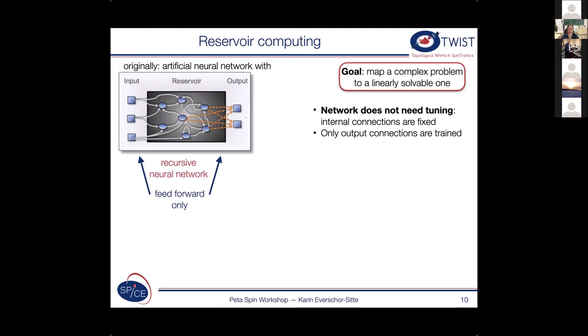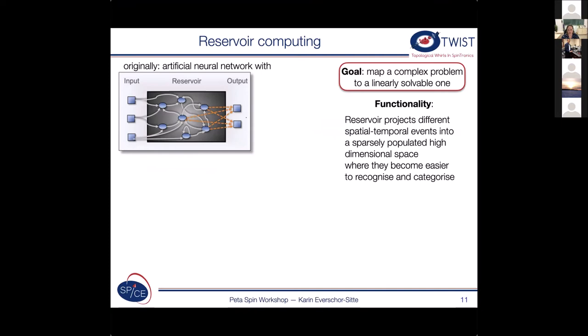And the goal of reservoir computing is not to solve something directly but to start from a complex problem and map it into something that is then linearly solvable and linearly solvable means easily solvable. So what is then the functionality of the reservoir? So let me just read it and then I try to show it in a pictorial way. So the reservoir projects different spatial temporal events into a sparsely populated high dimensional space where they become easier to recognize and categorize.